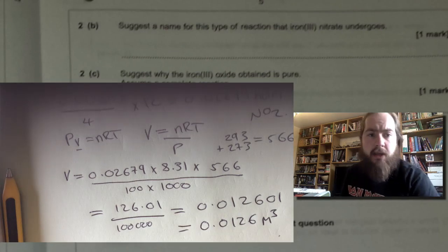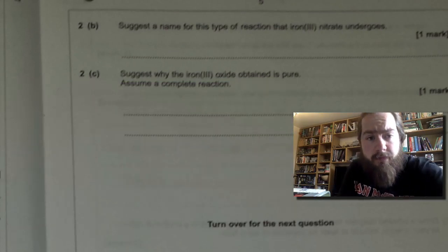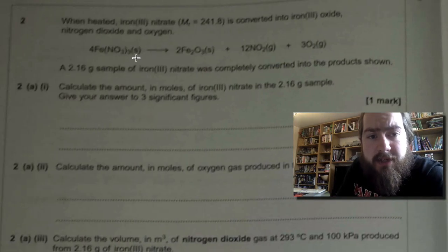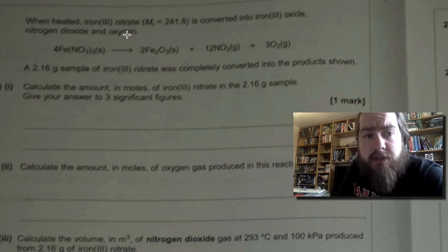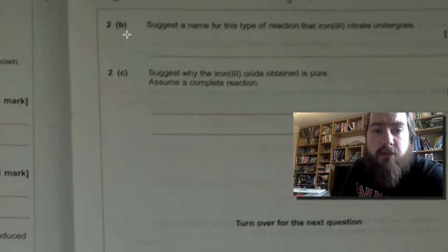2 part B. Suggest a name for the type of reaction that iron(III) nitrate undergoes. Now when you look at the formula we've got iron nitrate on one side and it's been broken down into three other things on the other side. And in the question it tells us that we're heating it. So the type of reaction when we're heating something to make it break down is called thermal decomposition.